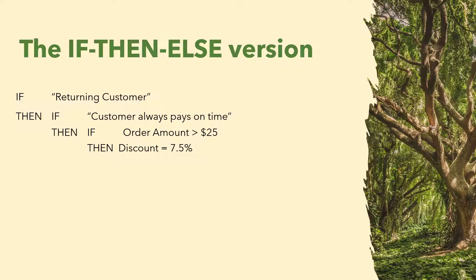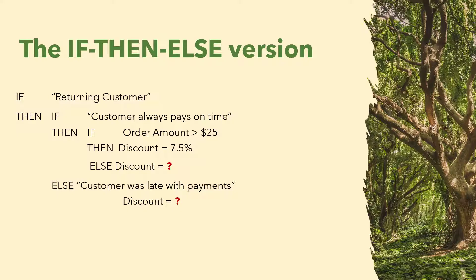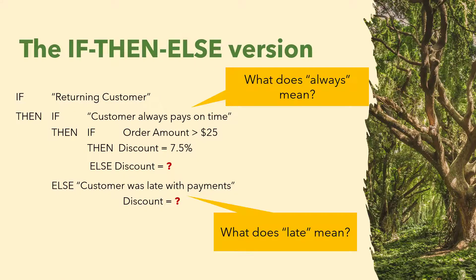If all of these conditions are true, then the discount will be 7.5%. But suddenly you discover that you don't know what to do if a returning customer that always paid on time orders something for less than $25 — will they get a smaller discount or not at all? Flag it as a question. What happens if a customer didn't always pay on time? Another question. As diligent business analysts, we should also clarify rules and definitions, as vague words like 'always' and 'late' may lead to ambiguous requirements.